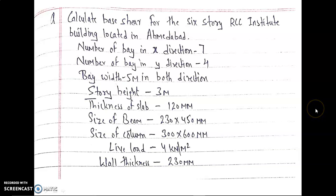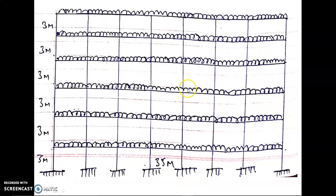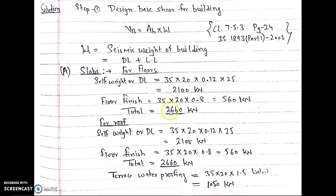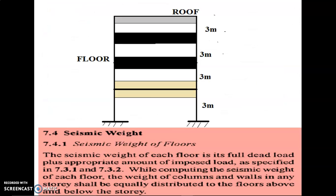Hello everyone, this is Lecture 5 and Part 2 of the numerical we studied in our previous lecture. In the previous lecture we solved this numerical and found the seismic weight using the given dimensions — the plan and elevation — by calculating dead load and live load for different structural elements of the building.